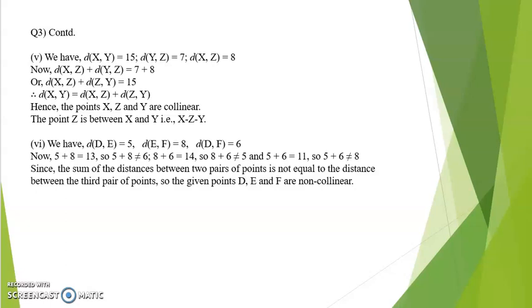Hence points X, Z and Y are collinear. The point Z is in between X and Y, that is X-Z-Y.